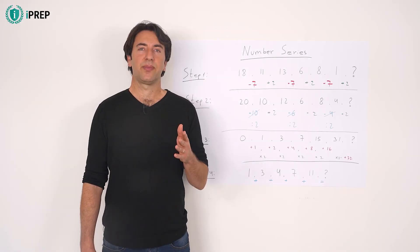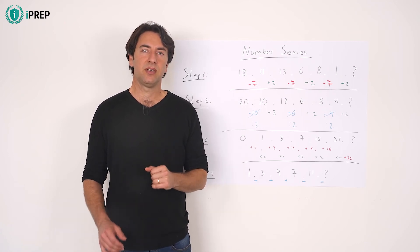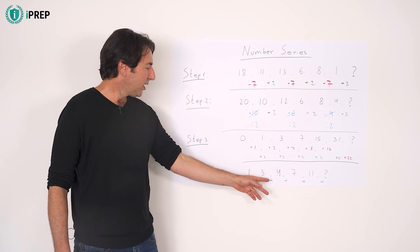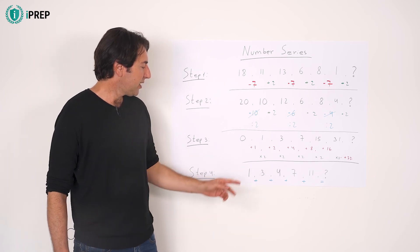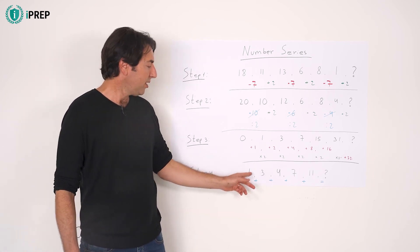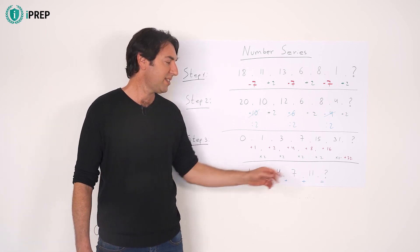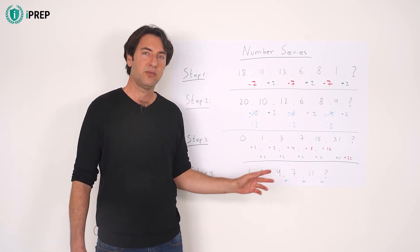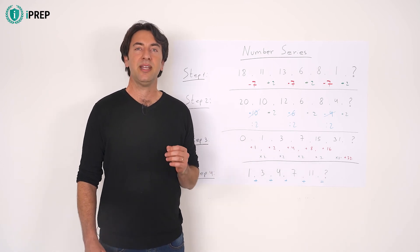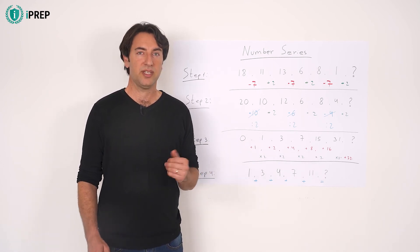Step 4. Check if the members of the series are a function of themselves. For example, in this series, each member is the sum of the two previous members. 1 plus 3 equals 4, 3 plus 4 equals 7, 4 plus 7 equals 11. Therefore, the next number will be 7 plus 11, which is 18.